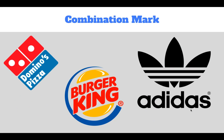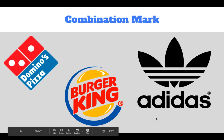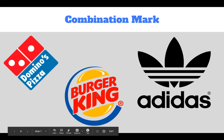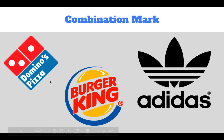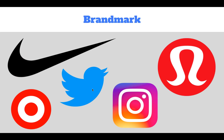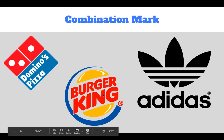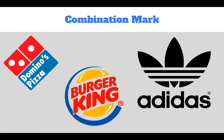Next we have combination marks. These combine either a lettermark or wordmark with a visual image — a brand mark. For instance, Domino's Pizza has the little domino piece inside a pizza box shape with the name 'Domino's Pizza.' Burger King's logo is meant to look like meat inside a burger with buns on the top and bottom. Adidas is a different type of combination mark — it has the symbol and the name, but they are not integrated into one image like Burger King and Domino's.